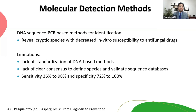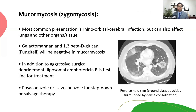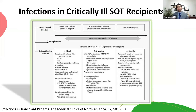PCR-based DNA methods to identify fungal pathogens are not standardized, with sensitivity ranging from 36 to 98%, so we cannot rely on them the way we do for bacterial infections. For mold-active treatment, the classic agents are voriconazole, posaconazole, and isavuconazole. For Mucormycosis, both galactomannan and 1,3-beta-D-glucan will be negative, and rather than voriconazole, these patients need liposomal amphotericin B to begin with.